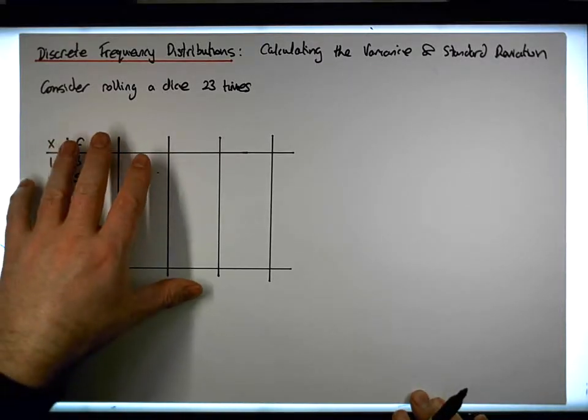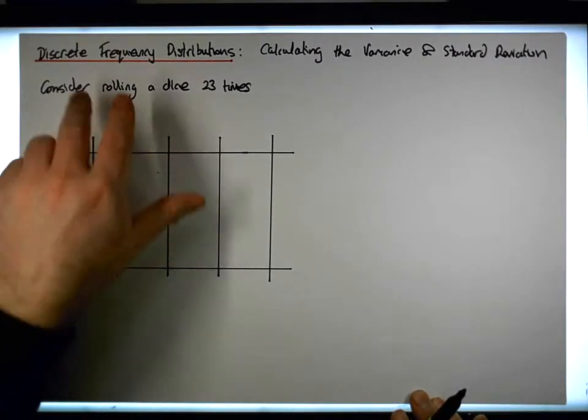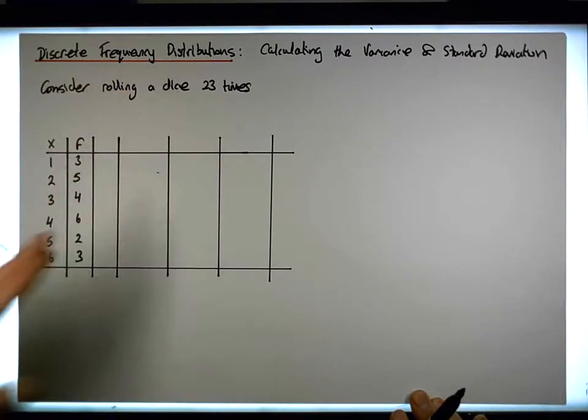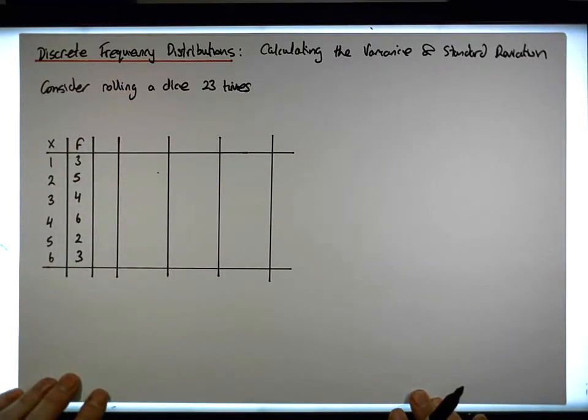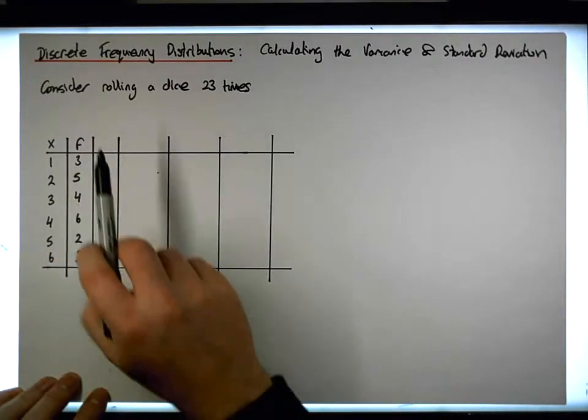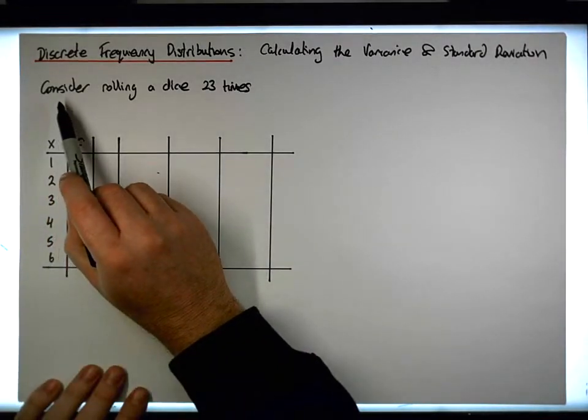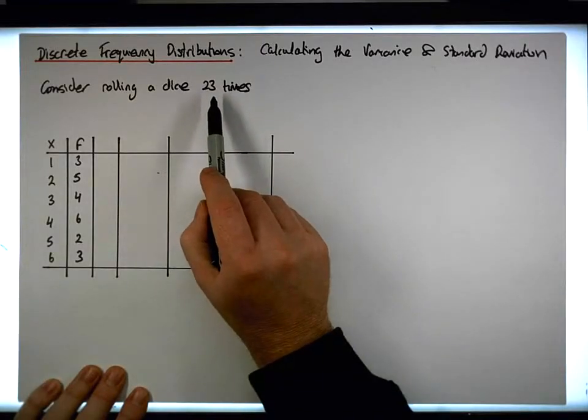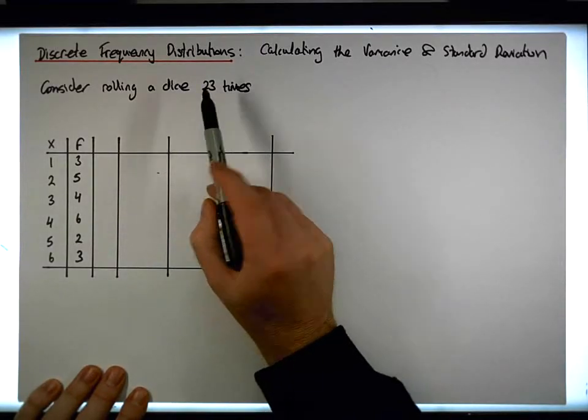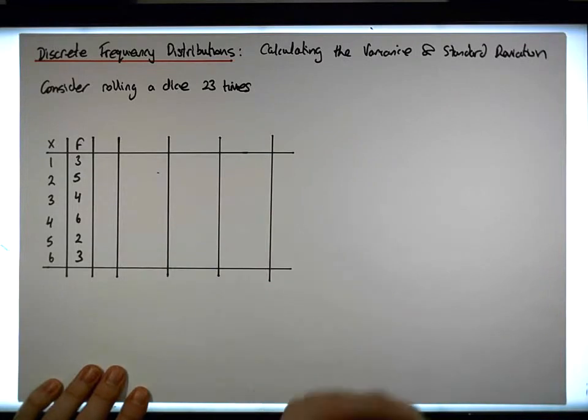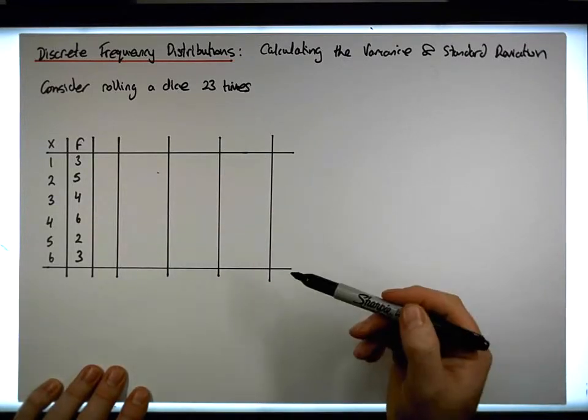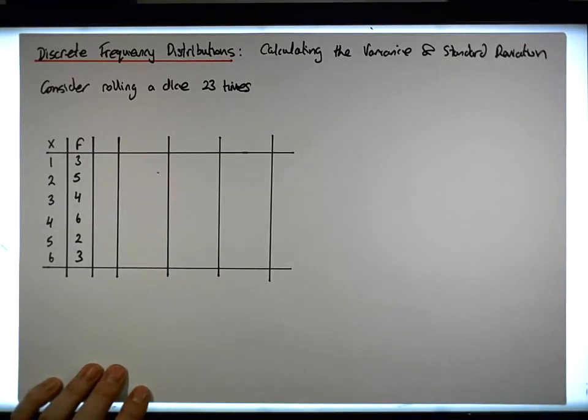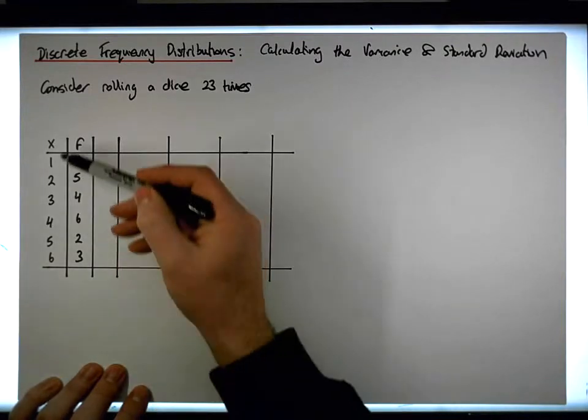This example, which uses the same frequency distribution that I used in the previous video where we calculated the mean, is based off an experiment where we roll a die 23 times and we keep track of how many times the particular discrete face values have occurred when we've rolled the dice 23 times. And here are the results.